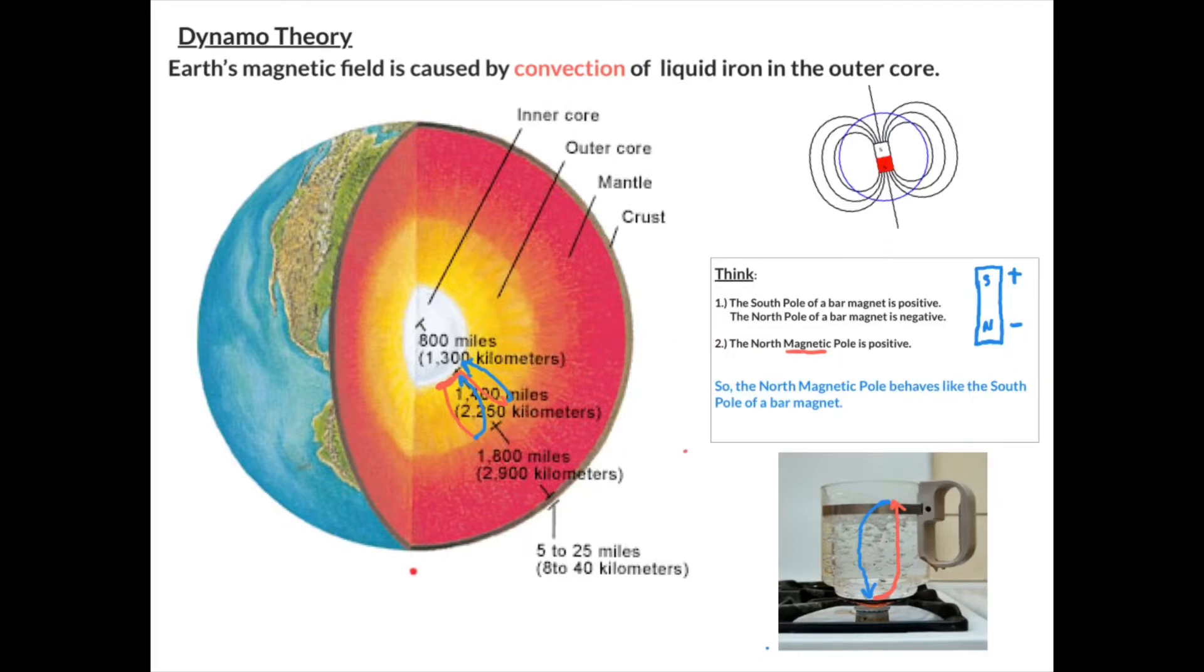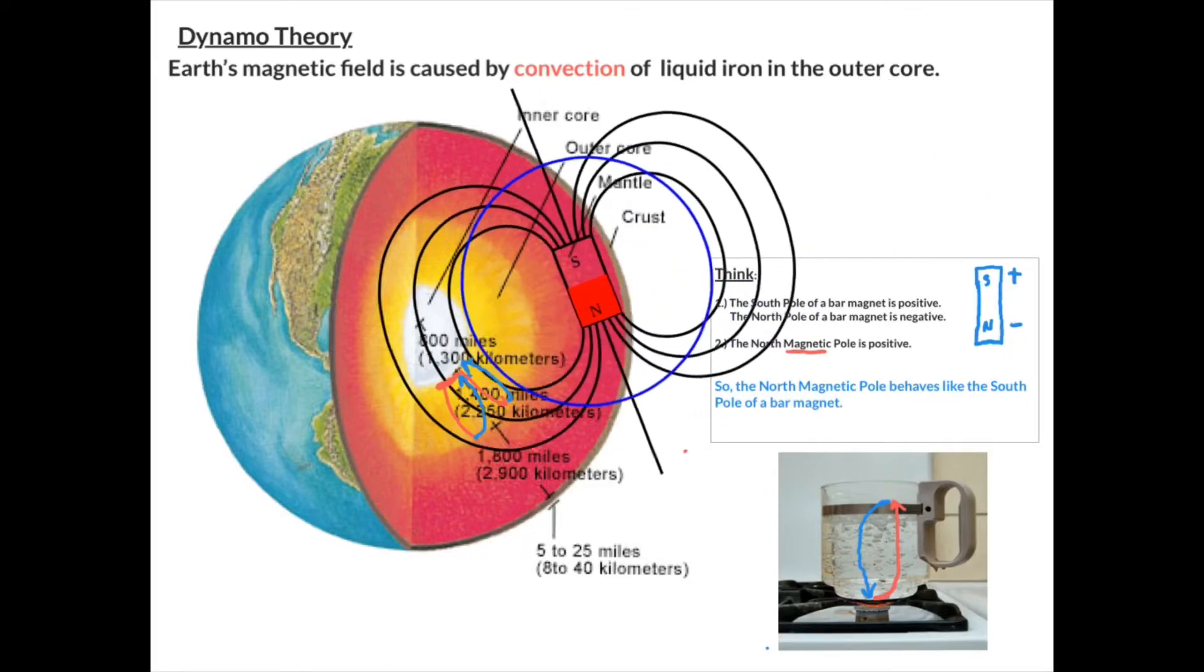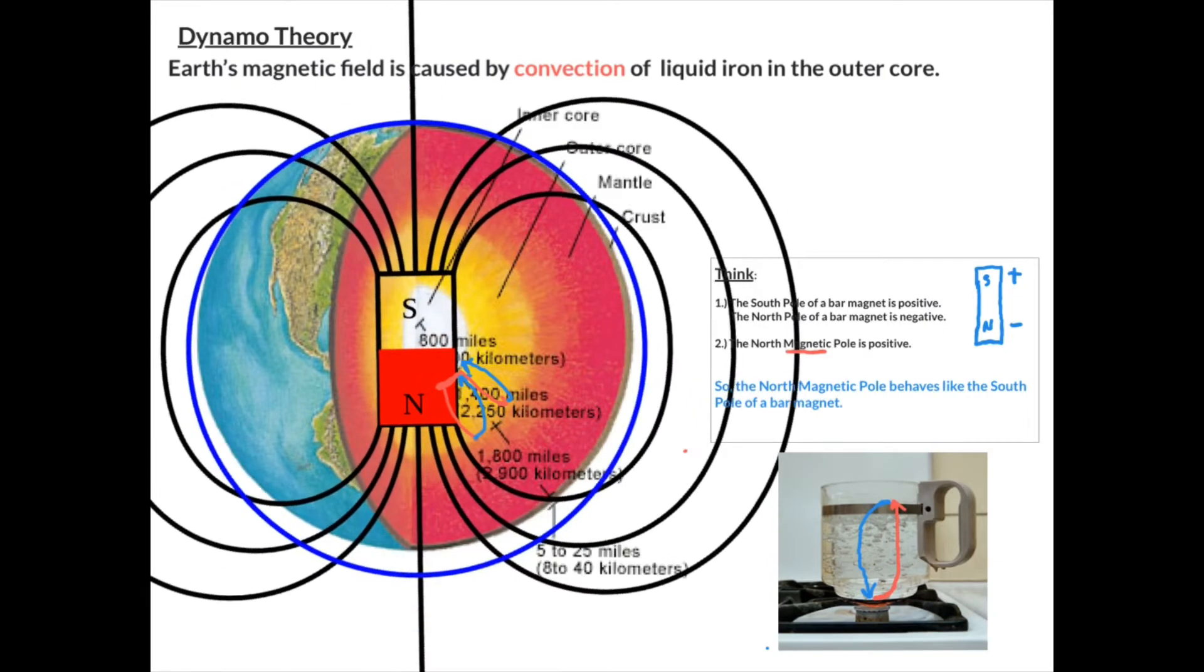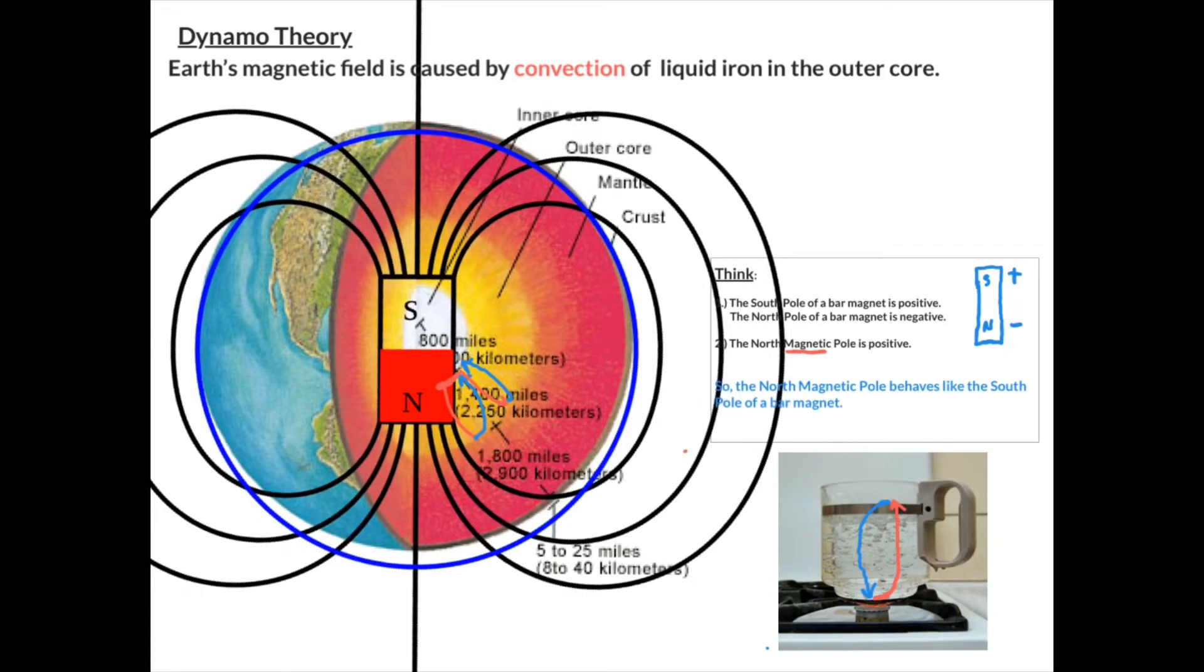So we have our north pole right here. We've got our south pole right here. What I'm going to do is I'm going to pull out this figure. And the way that we're actually going to orient this is like this. So if we had a bar magnet that was started in our core and projected out into space, the south end of the bar magnet would actually be pointed north. So it is true then that the north magnetic pole behaves like the south pole of a bar magnet.